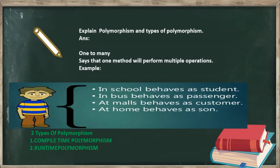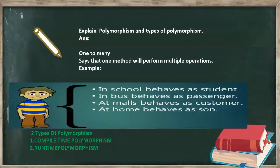If you explain like this, the interviewer will be satisfied with your answer. Polymorphism stands for one to many operations. We have two types: compile time polymorphism, which is the overloading concept, and runtime polymorphism, which is the overriding concept.